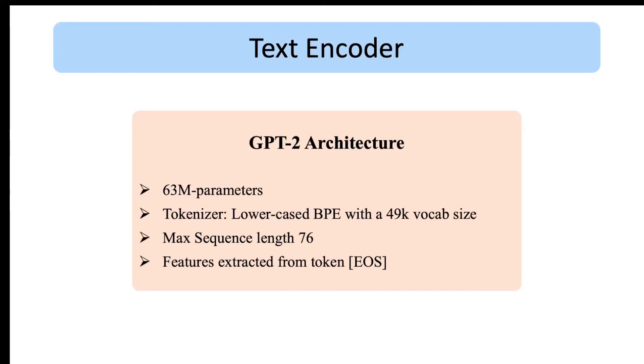For the text encoder, they use a transformer model with architectural details as in GPT-2. For tokenization, they use lowercase BPE and a vocabulary of size 49,000. For efficiency reasons, the max sequence length is capped to 76 tokens. As output of the text encoder, they extracted the features associated with the EOS token for end of sequence for the final text representations.